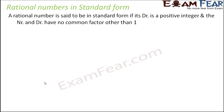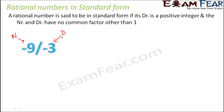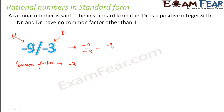Let us understand with an example. Take minus 9 by minus 3. The numerator is minus 9 and the denominator is minus 3. Do they have any common factor? Yes, the common factor between minus 3 and minus 9 is minus 3, because minus 9 can be written as minus 3 into 3, divided by minus 3 into 1. So minus 3 is a common factor of both.